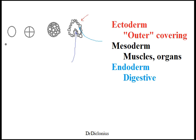What happens is the zygote will multiply, and then multiply again. The most important thing to get out of this is that it just multiplies — it doesn't grow. The exact size of it is still the same, but it's multiplying just in number, kind of to create surface area.